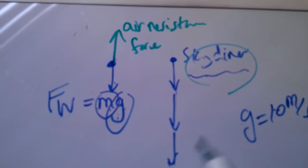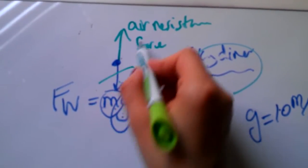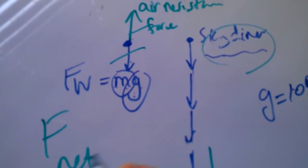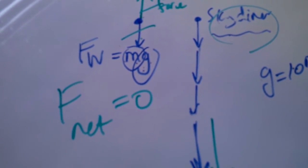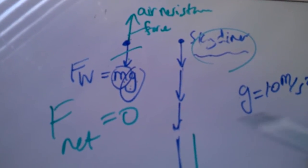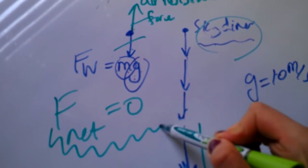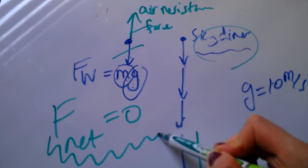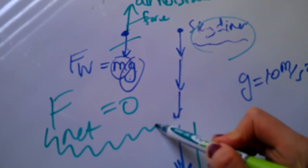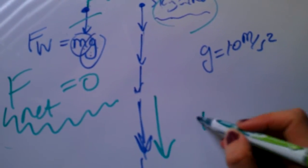At that point these two cancel one another out, and F net becomes zero. Therefore, now we go to the first category of objects. If F net is zero, then your object, if it's moving with some velocity, it keeps going with the same velocity, and that's called terminal velocity.